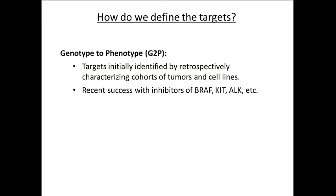How do we identify the targets? There are really two main ways. One is called a G-to-P approach or a genotype-to-phenotype approach. This is where we take a large cohort of tumors, retrospectively profile them, looking primarily for things that are recurrent. Recurrence is a little bit of a surrogate for being important — if something like BRAF V600E is found in 50% of melanomas, that same mutation appearing in half of melanomas just implies it has to be important.